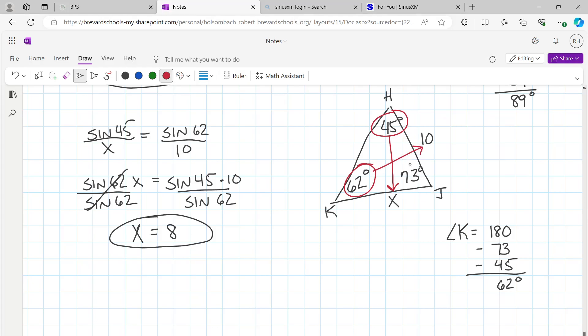Can anybody tell me why we didn't use the 73? Very good. It doesn't have a variable or a value as its opposite side, so we didn't need to use it. We're only concerned with the variable and the side length given, and then we need the angles opposite of those.